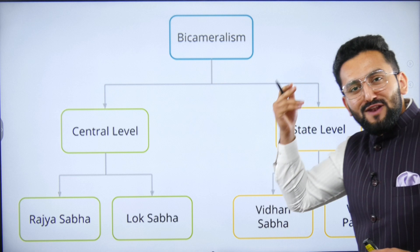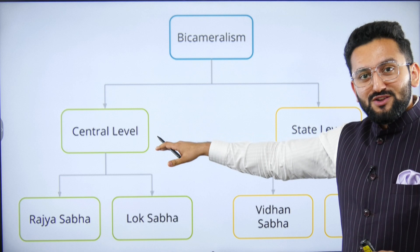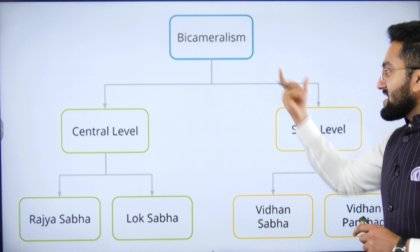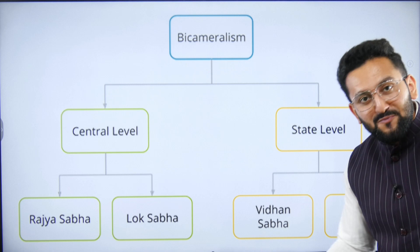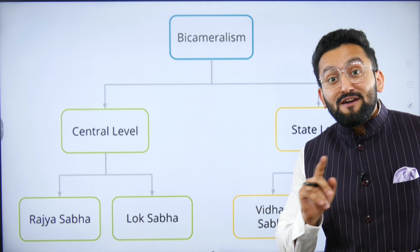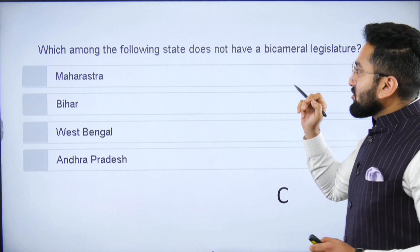As we go through state legislature, just reflect on what we discussed in case of union legislature Parliament. At the level of center we have two houses — bicameral legislature — Rajya Sabha and Lok Sabha. Similarly, at the level of state, we also have in some states two houses: Vidhan Parishad, which we call legislative council, and Vidhan Sabha, which we call legislative assembly. Remember, not every state has bicameral legislature.